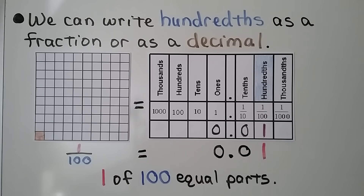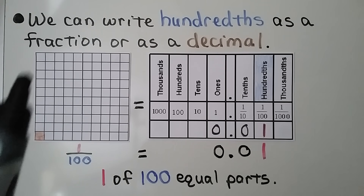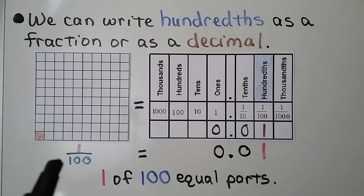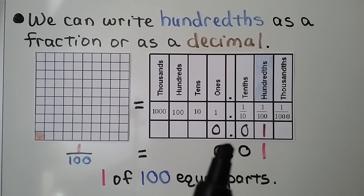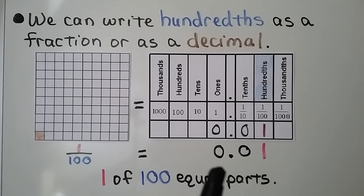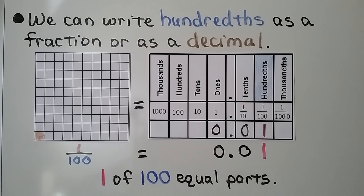We can write hundredths as a fraction or as a decimal. Here we have 100 equal parts in this big square, and one of them is shaded in — that's one hundredth. Here we have it written as a decimal. We can see our place values: ones, decimal point, zero tenths, and one hundredth. So we have 0.01. This is one hundredth — it's one of 100 equal parts.